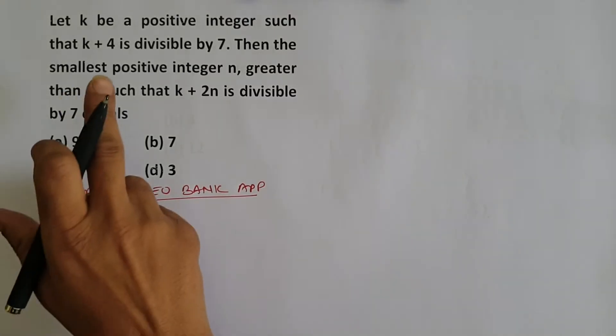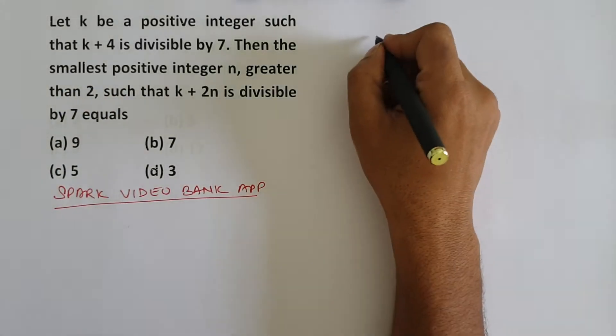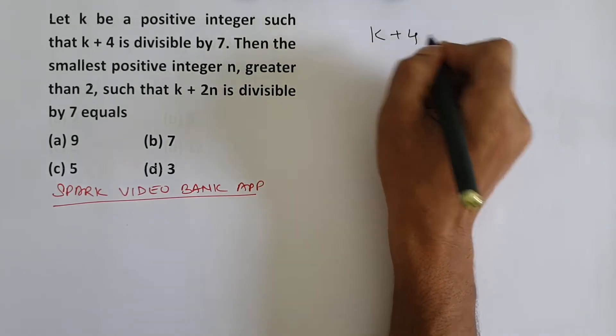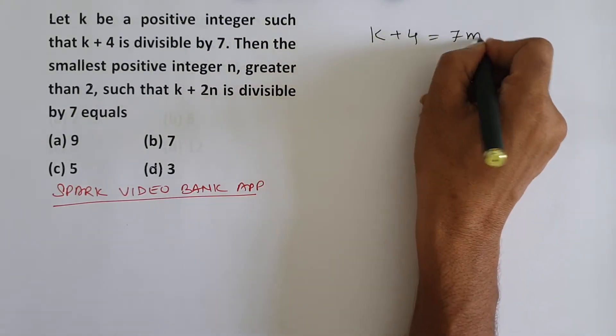Let k be a positive integer such that k plus 4 is divisible by 7. So k plus 4 is equal to some 7m.